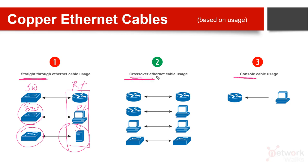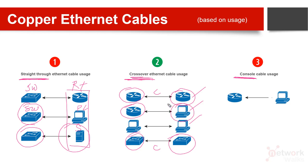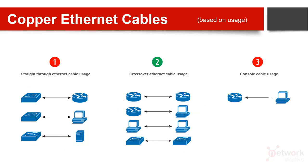The second type is a crossover cable. A crossover cable is used when both sides of the cable have the same type of device. For example, router to router — crossover. Switch to switch — crossover. And since routers, computers, and servers are considered the same device type, router to computer is also a crossover cable. PC to PC — crossover. Switch to switch — crossover.